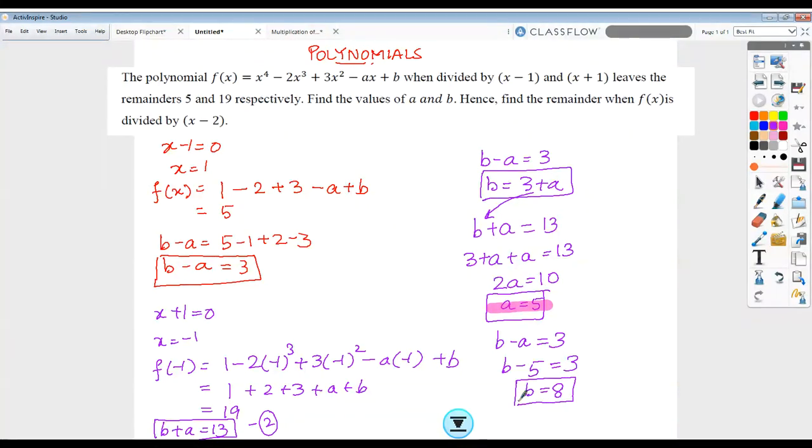Now after I get the values of a and b, I can easily take out my polynomial, and this polynomial now becomes f(x) equals x^4 minus 2x^3 plus 3x^2 minus 5x plus 8.